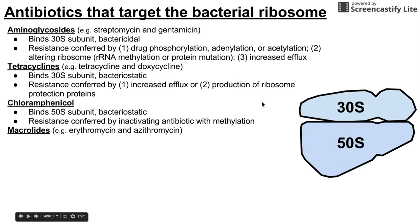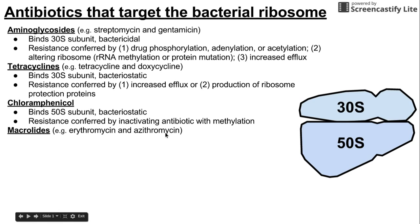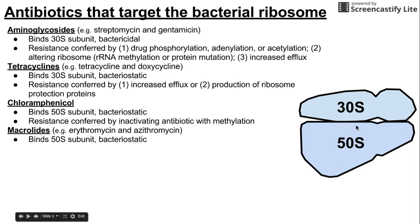The next class is the macrolides. Two examples are erythromycin and azithromycin — these can be thought of as the "-romycins." Macrolides also bind to the 50S subunit and are bacteriostatic.